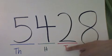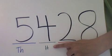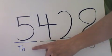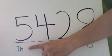T for 10. The 4 is in the hundreds column. This is the H for hundreds. And the 5 is in the thousands column. The TH stands for thousand.